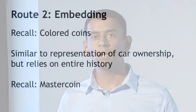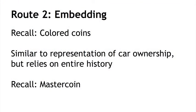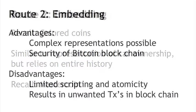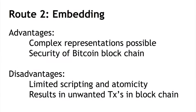Bitcoin has something called OP_RETURN, which is a type of script that allows 40 bytes of arbitrary data to be encoded. You can also use fake transactions with non-existent addresses, exploit multi-signature, and so on. These are all possible ways to encode data into the blockchain and embed arbitrary transactions into Bitcoin itself. This approach has some advantages and disadvantages — just more complex representations, obviously.